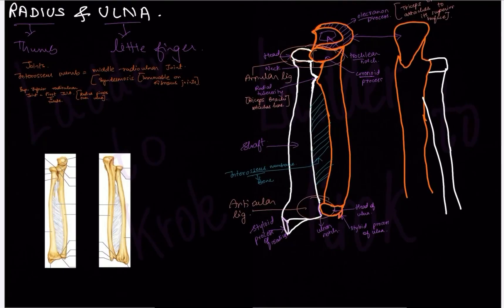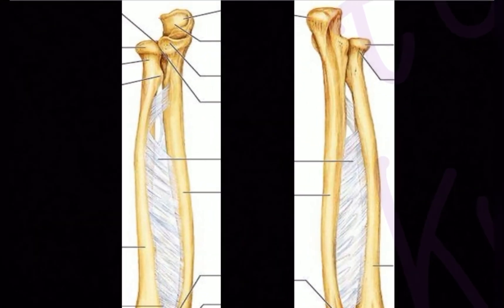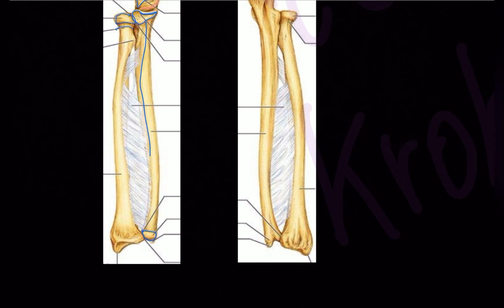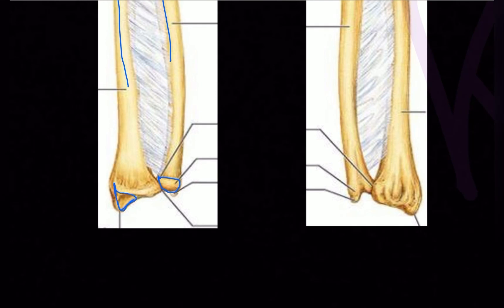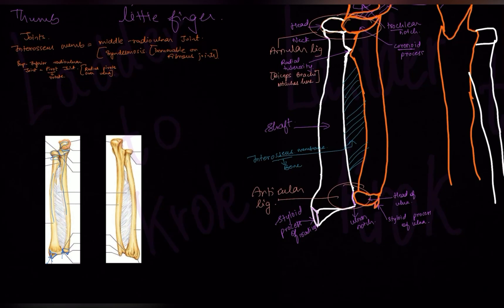To recap on the diagram: for the ulna you have the olecranon process at the top, the trochlear notch, the coronoid process, the shaft, and the head of the ulna distally. For the radius you have the head of the radius proximally, then the neck, the radial tuberosity, the shaft, and the styloid process of the radius distally as a triangular projection. The ulnar notch of the radius is the concave area on the radius that articulates with the ulna. The styloid process of the ulna is the small protruding structure on the ulna side.